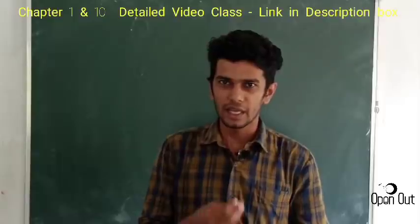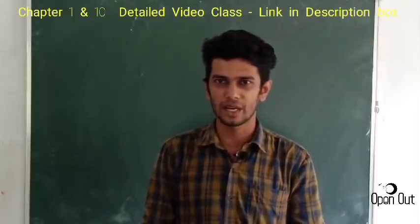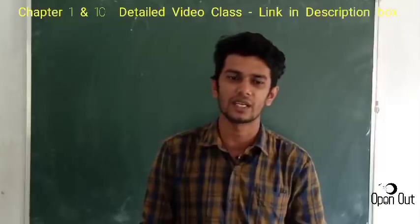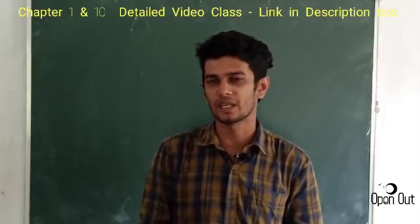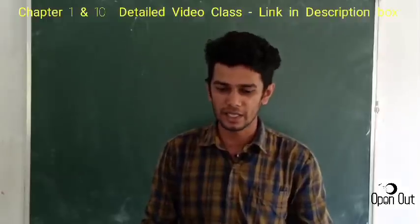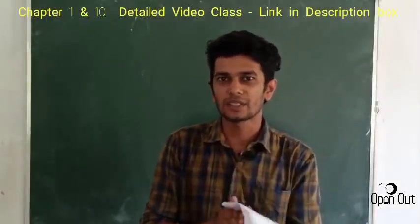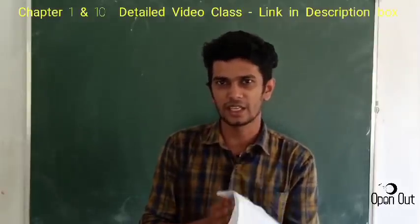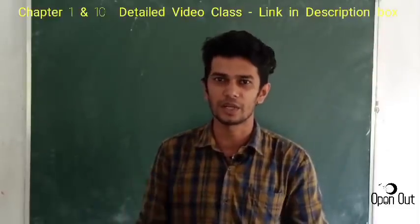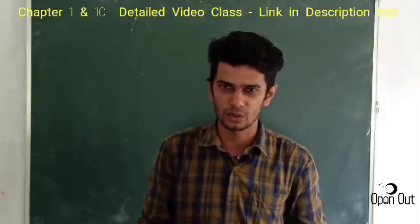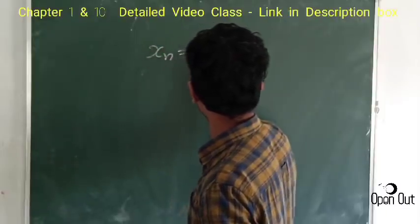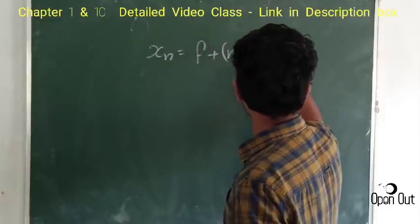We are going to talk about the first terms, the second terms, the common difference, and the number of terms. Save this equation: xn is equal to f plus n minus 1 into d.